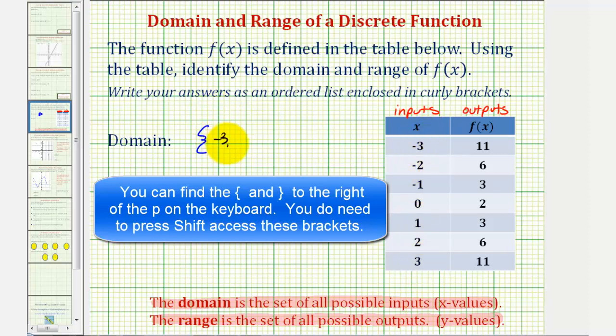So we have negative three, negative two, negative one, zero, one, two, three. This would be the domain of f of x.